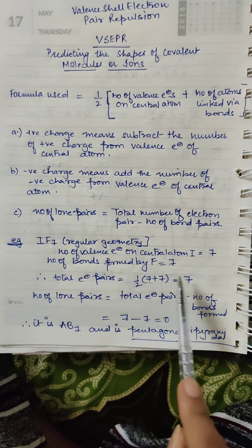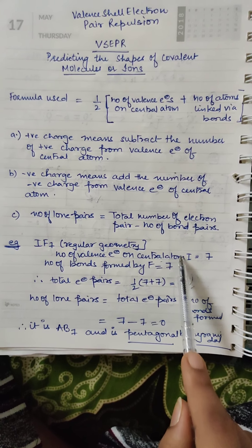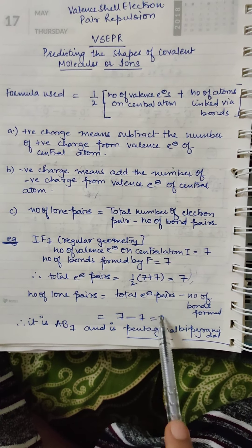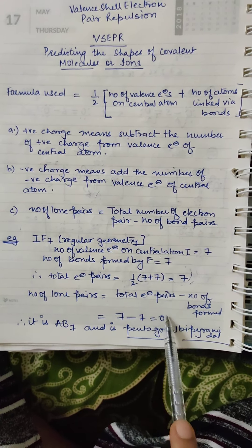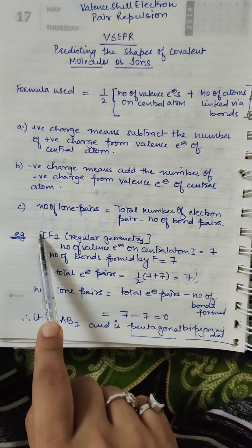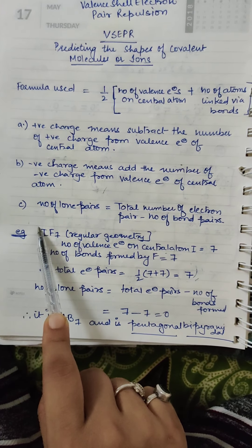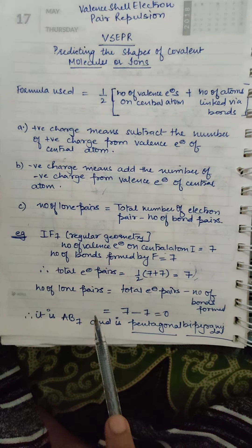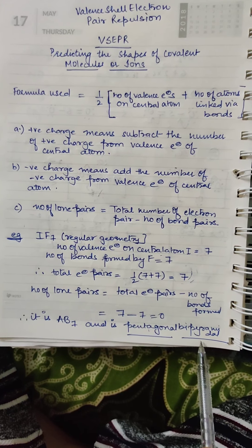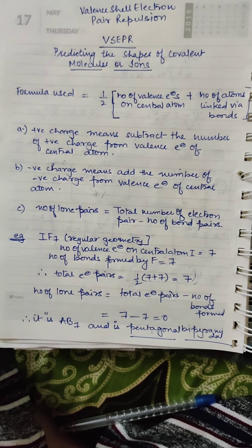Now we calculate the number of lone pairs to determine whether this is a regular or irregular geometry compound. Lone pairs equal total electron pairs minus number of bonds formed: 7 minus 7 equals 0. There is no lone pair in IF7, so it has regular geometry. Therefore its shape is AB7, which is pentagonal bipyramidal.